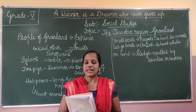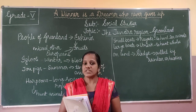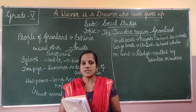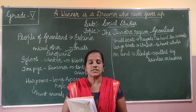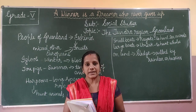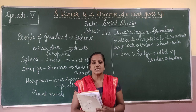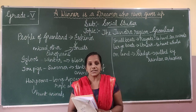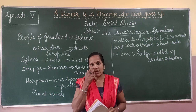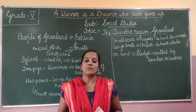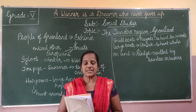So Greenland lies in the frigid zone. The frigid zone is the area between the poles and the Arctic and the Antarctic circle. We call this region as the Tundra region. So in this lesson we are going to learn about the place called Greenland.